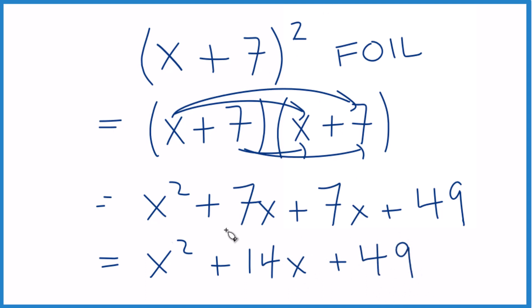And then we put the 49 there on the end, and we have an expanded and simplified x plus 7 squared. If you factored this or used the quadratic, you would get x plus 7 times x plus 7 or x plus 7 squared.